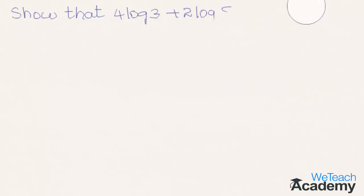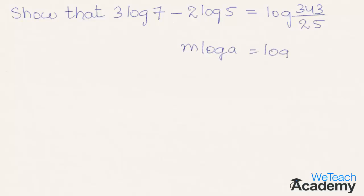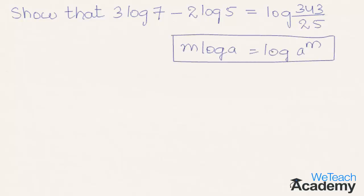Now let us proceed and solve one more problem using the same concept. Show that 3 log 7 minus 2 log 5 is equal to log 343 divided by 25. Here 3 log 7 is in the form of m log a, which is equal to log a to the power of m. So using the law of power,